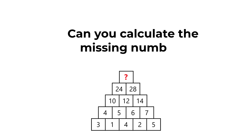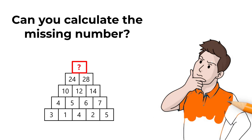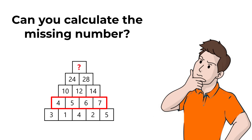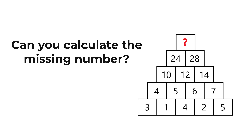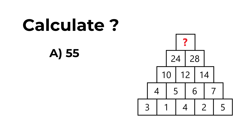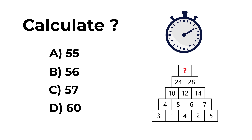Here's one of my favorite questions because it is so unusual. You are presented with a pyramid containing five different layers. From top to bottom: a missing number; then 24 and 28; then 10, 12, and 14; then 4, 5, 6, and 7; and the bottom layer has 3, 1, 4, 2, and 5. Choices for the missing number: A, 55; B, 56; C, 57; D, 16. Give yourself 5 to 15 seconds.